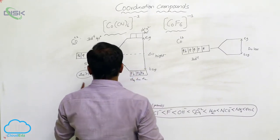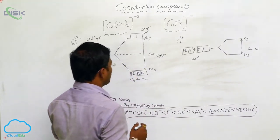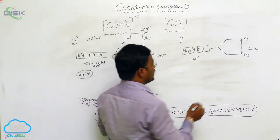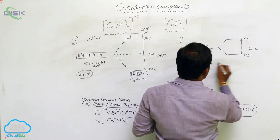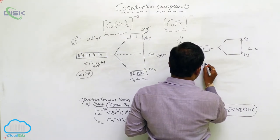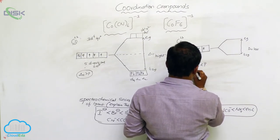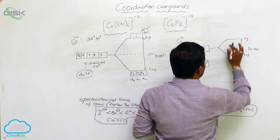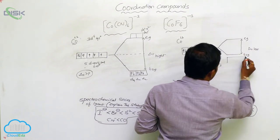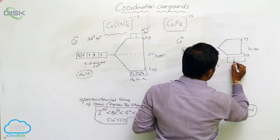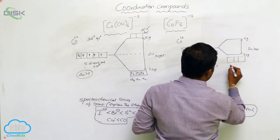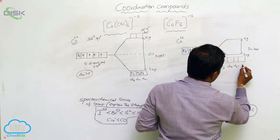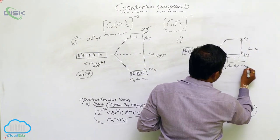The reason cyanide is a strong field ligand and fluoride is a weak field ligand: in the case where delta₀ is less than P, when the energy difference between these two is less, the orbitals involved are dxy, dyz, and dzx.